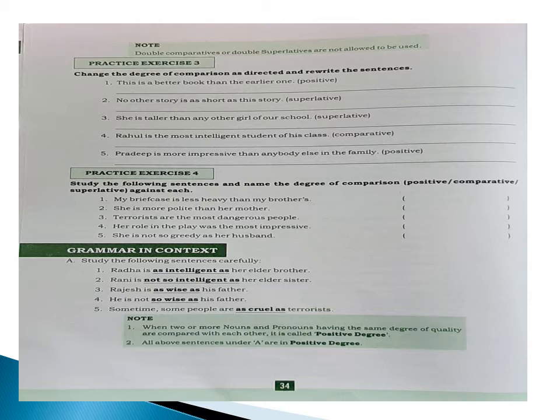See here, grammar in context. Study the following sentences carefully. First sentence: 'Rada is as intelligent as her elder brother.' 'Rani is not so intelligent as her elder sister.' 'Rajas is as wise as his father.' 'He is not so wise as his father.' And: 'Some people are as cruel as terrorists.' Here we observe there are some sentences in the negative form where we use 'so...as.'